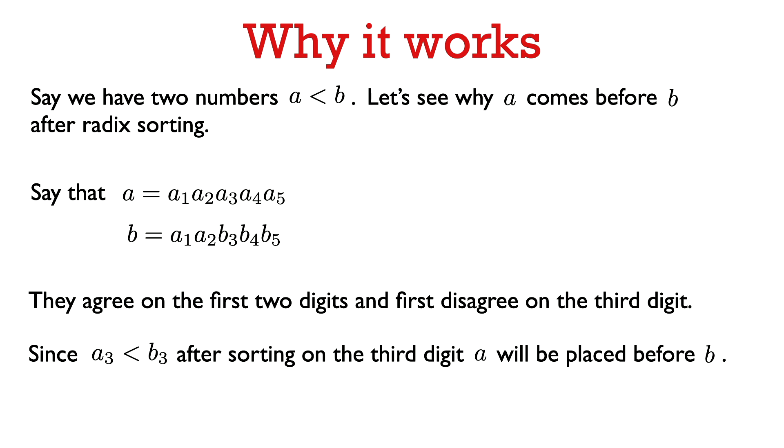Say we have two numbers A and B, and suppose that A is less than B. We want to see that A is going to come before B after Radix sorting. Let's say that A has digits A1, A2, A3, A4, A5, and B agrees with A in the first two digits, so B is A1, A2, B3, B4, B5. They agree on the first two digits and then disagree. Since A is less than B, we know that A3 has to be less than B3. So after sorting on the third digit, A is going to be placed before B. After we do this sort on the third digit, we know that A is going to come before B.